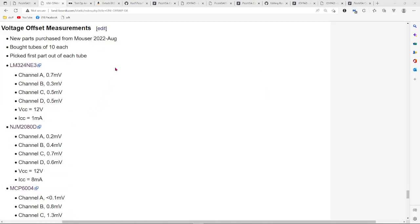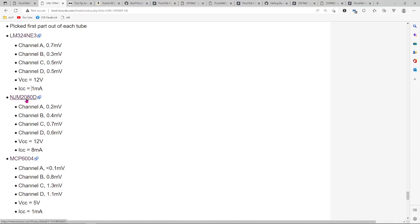I bought three tubes of op amps with three different part numbers and they're all new stock bought directly from Mouser, so they should be all good parts. I just picked the first part out of each tube and measured the offset voltage using this method. The LM324 NE3 part has values that are all below one millivolt offset voltage with 12 volts running and one milliamp. This is a little more odd part number, the NJM2080D, but it is available at the moment in somewhat limited quantities. It also has pretty good offset voltage numbers below one millivolt in all cases and uses quite a bit more current at eight milliamps per part.